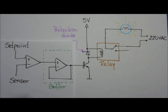Finally, we decided to use a buffer or voltage follower to isolate the relay circuit from the op-amp that produces the control signal. And that's it. We have a fully functional on-off controller as long as we are capable of producing an appropriate setpoint voltage.